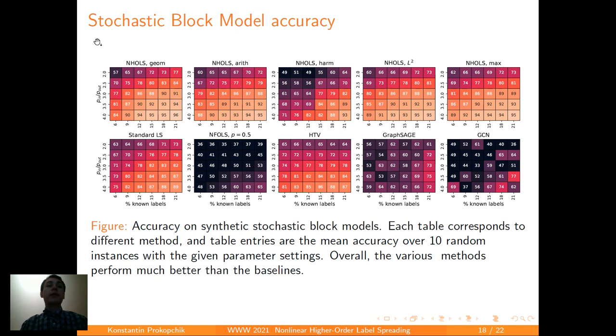Here, we present 10 different heatmaps. On x-axis, we have percentage of known labels. On y-axis, we have the ratio of PIN to POUT. Each value is the mean accuracy that is obtained by running the algorithm 10 times across 10 different generated hypergraphs. And I also have to note that in the top left corner, we have the worst setting for any algorithm. And in the bottom right corner, we have the best setting for any algorithm. And you can see that for any setting, our algorithm produces much better results than any of the other algorithms below.